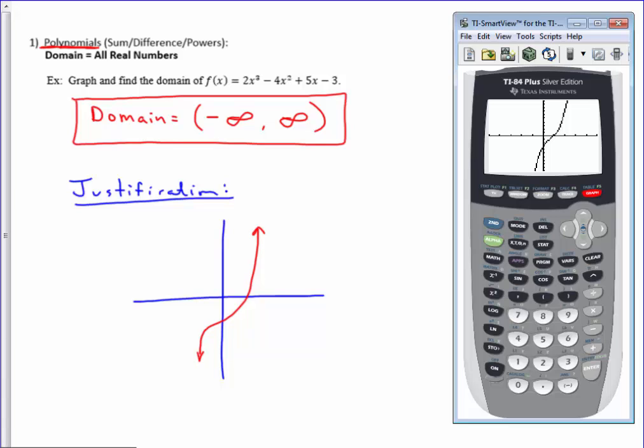So a basic graph or sketch of my graph would look something like this. Now, because I go on and on, basically this will go up and out forever. This will go down and out forever. And so that is the reason that my domain is negative infinity to positive infinity.